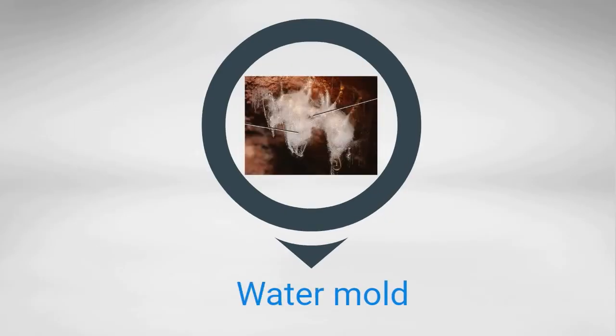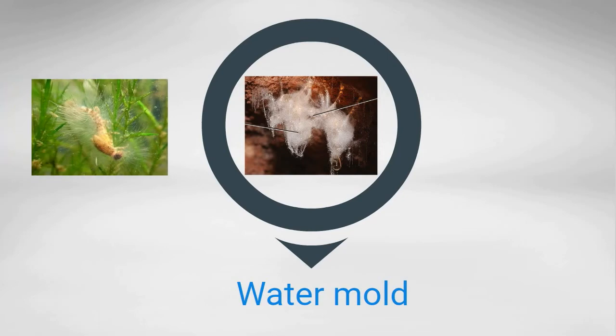Water molds were once thought to be fungi, but their cell walls are not made of chitin like fungi. Some water molds are parasites and grow on the scales or eggs of fish. Other water molds are parasites that attack potatoes and grapes.